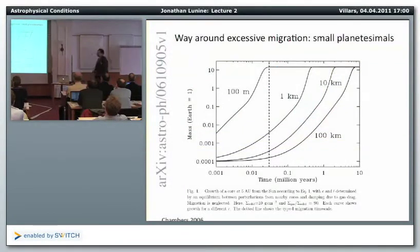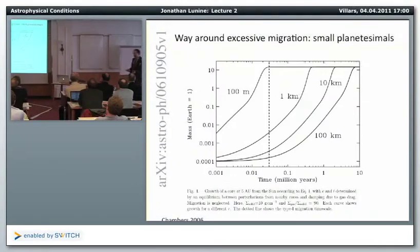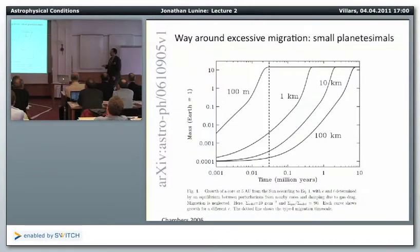One way around excessive migration, proposed by John Chambers, is maintaining a large population of small planetesimals. With a mean planetesimal size of 100 meters, it may be possible to grow Earth-mass or larger bodies in 10⁴–10⁵ years — fast enough to avoid complete migration. Whether this is realistic in protoplanetary disks remains an open question.